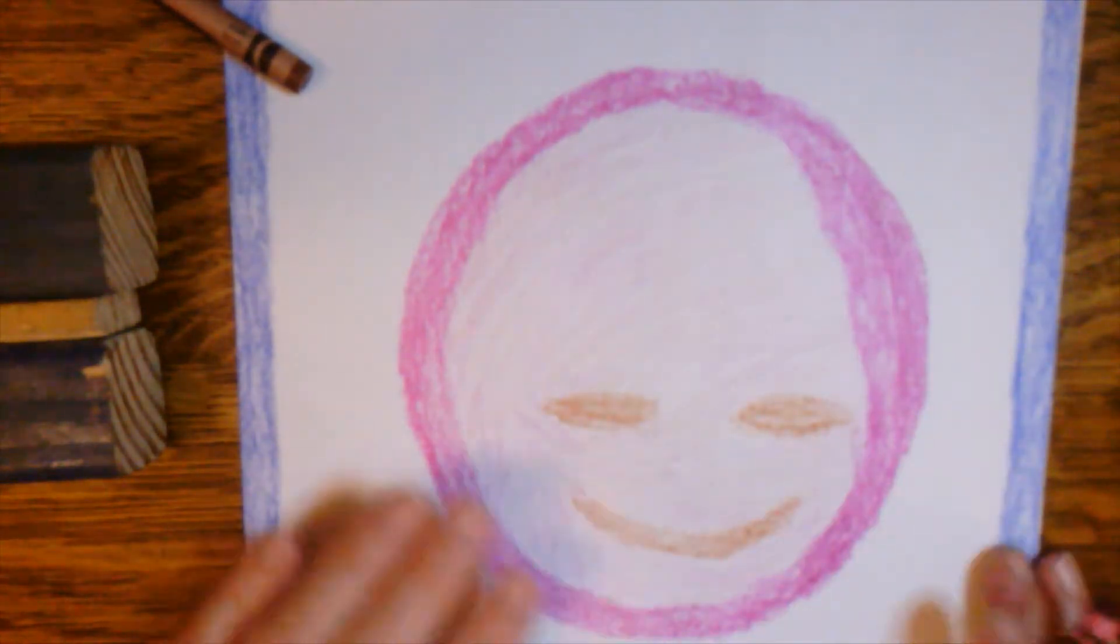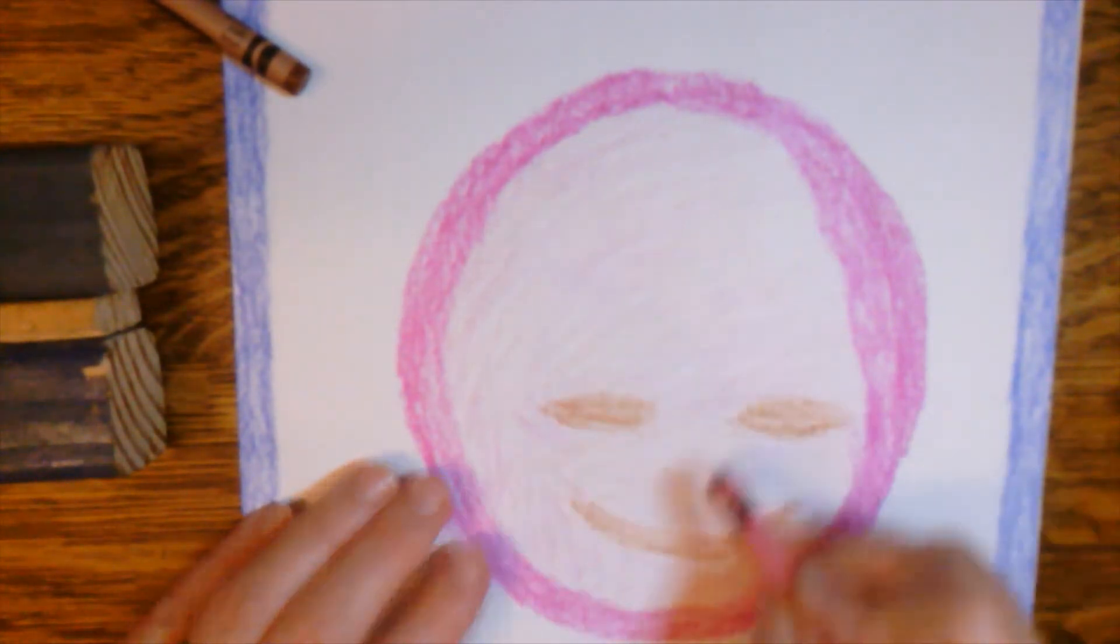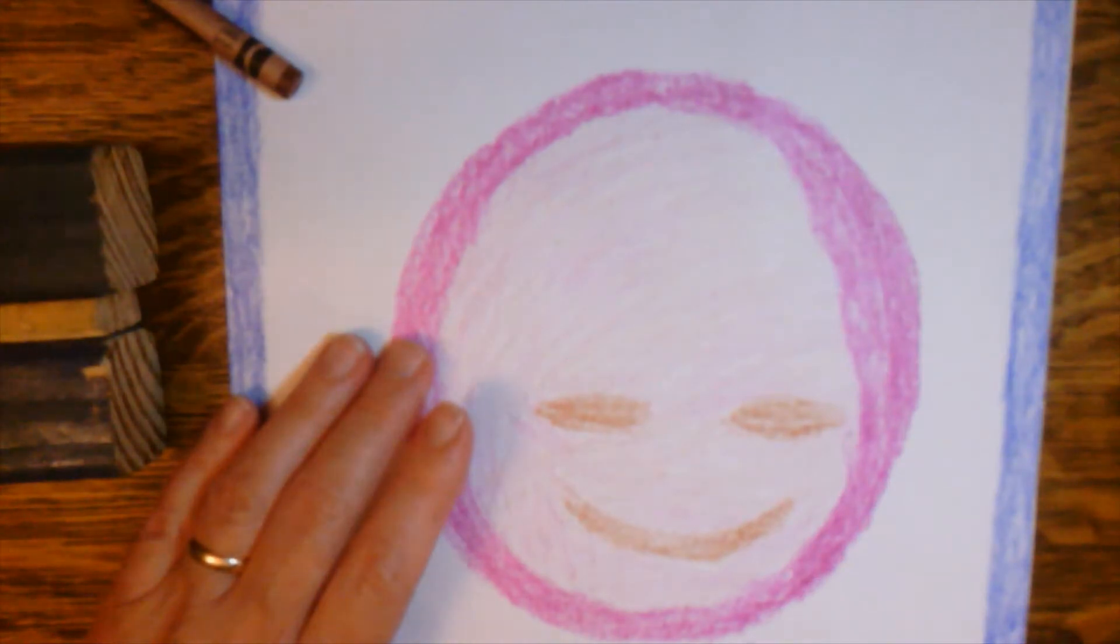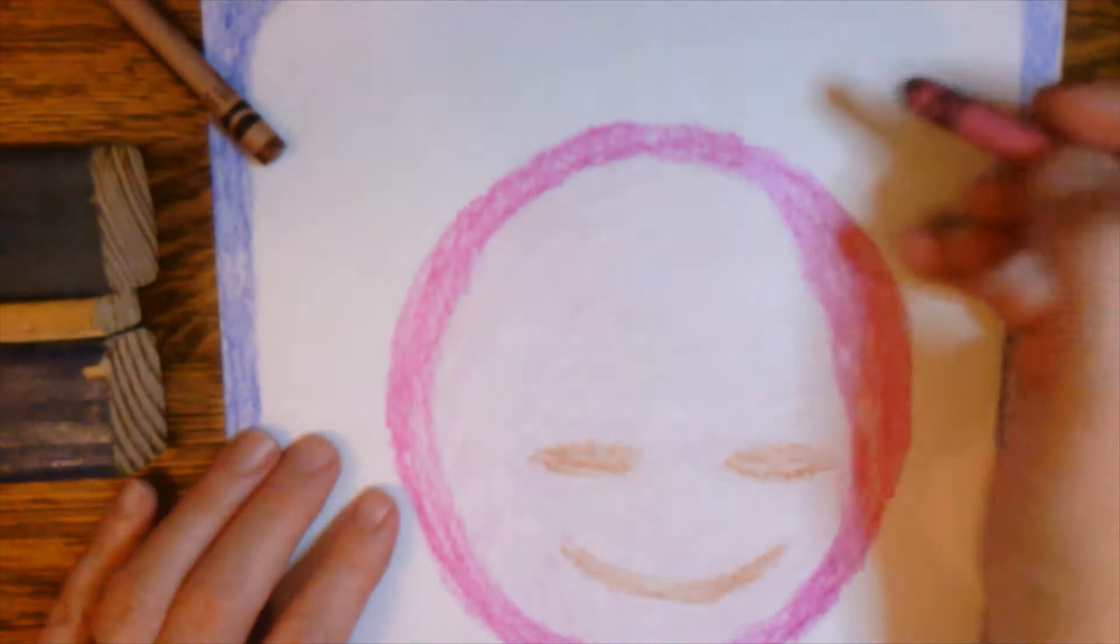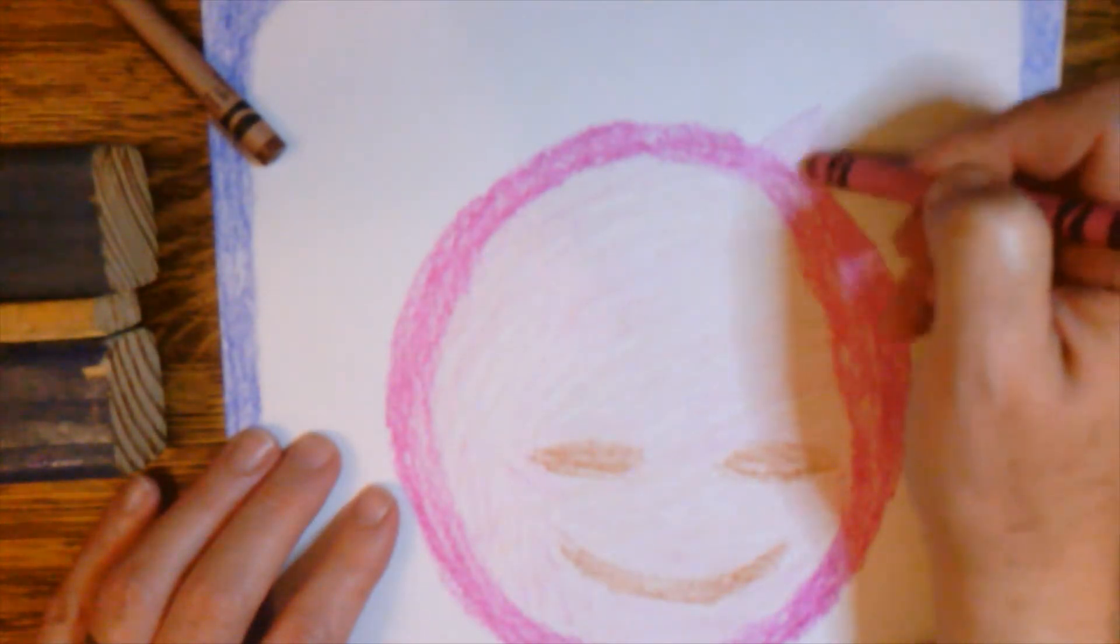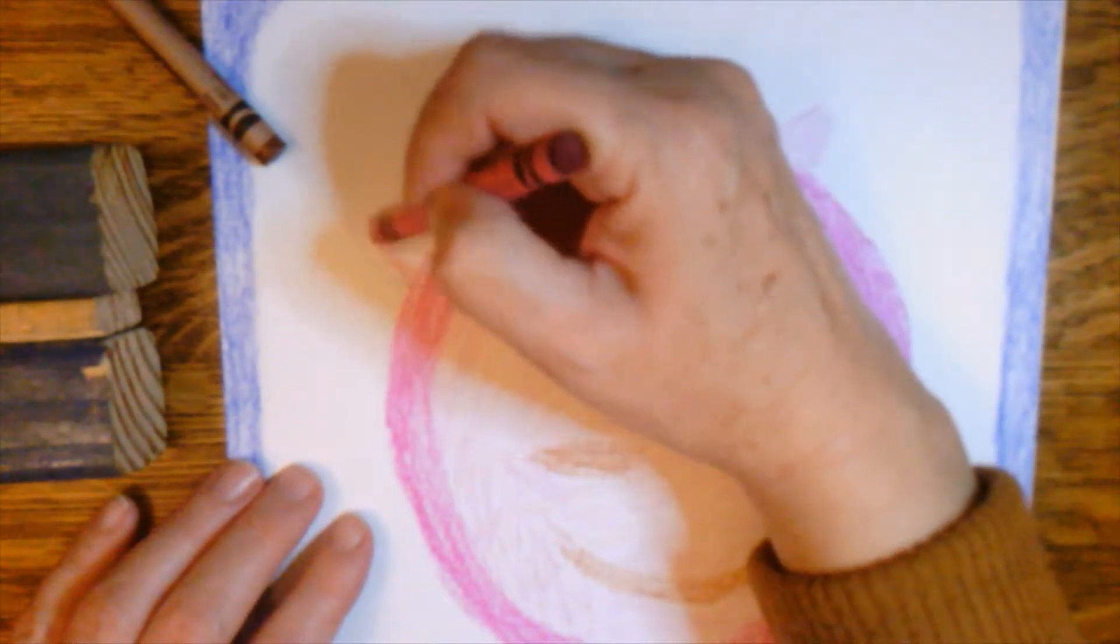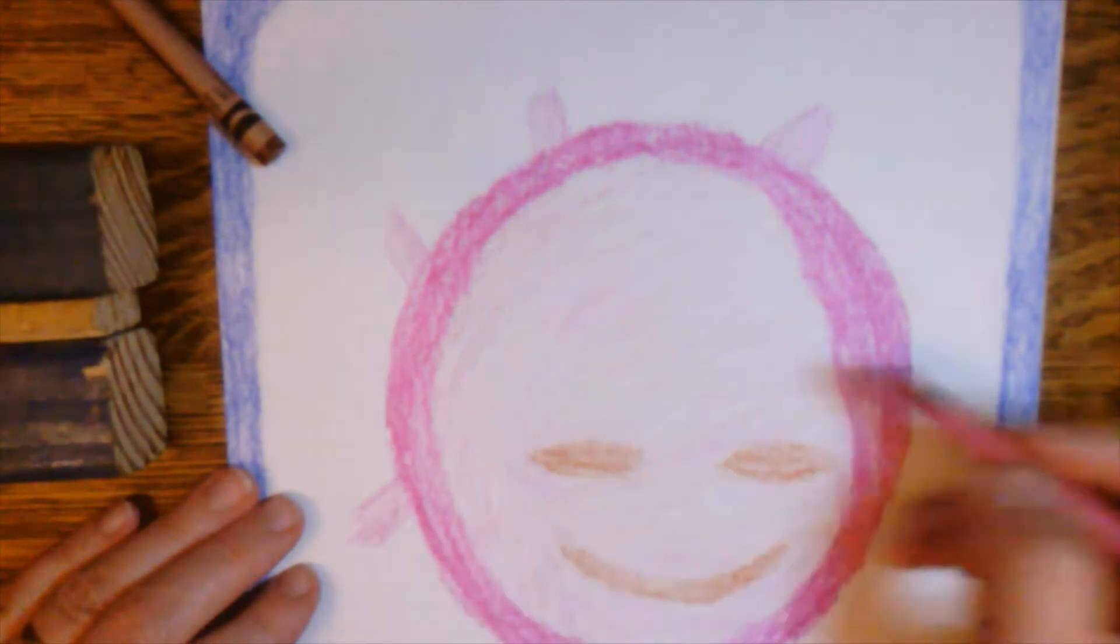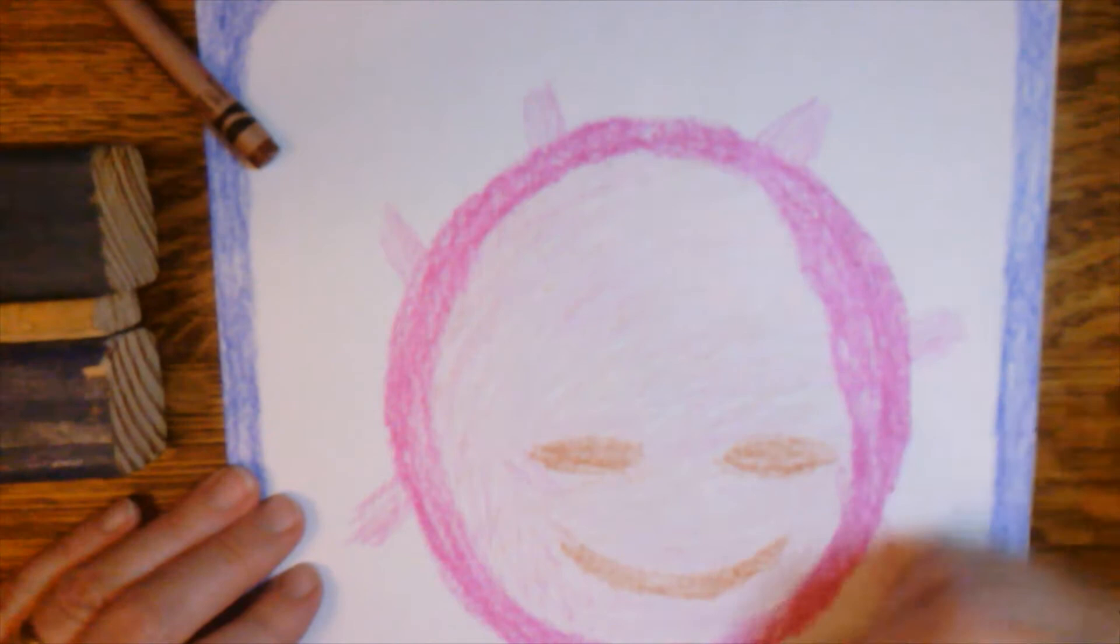All right, so here's my Oliver octopus. Now I need to think about his arms and legs, right? And you know he's got eight. So what I'm gonna do is just start putting some little things out like this. One, two, three, four, five, six, seven, eight.